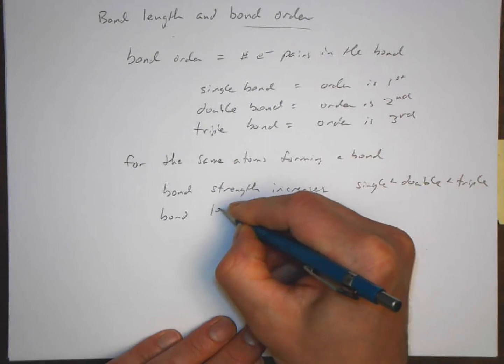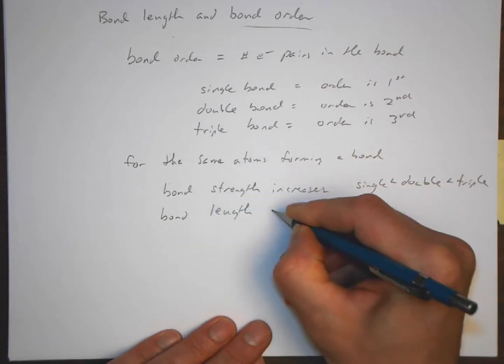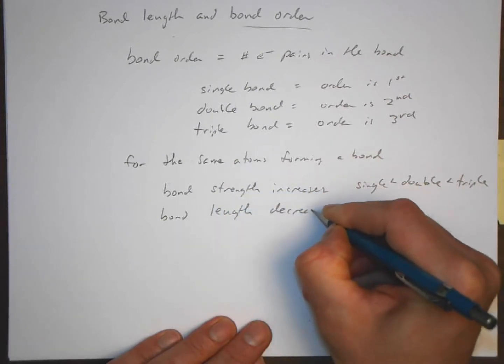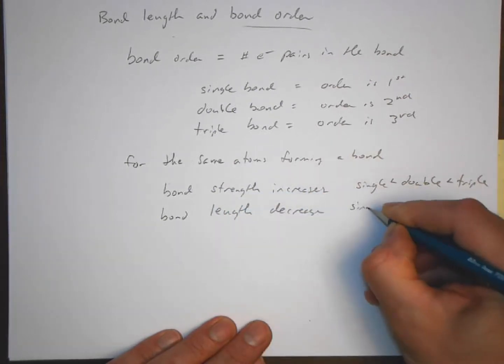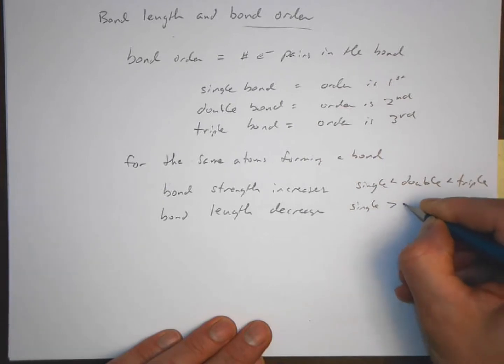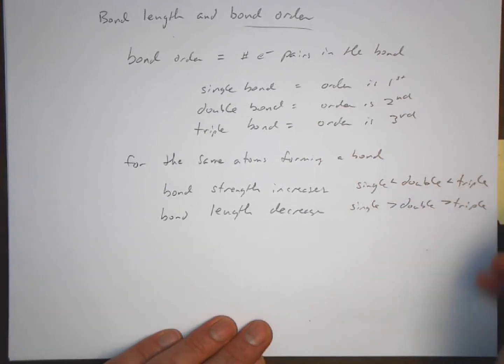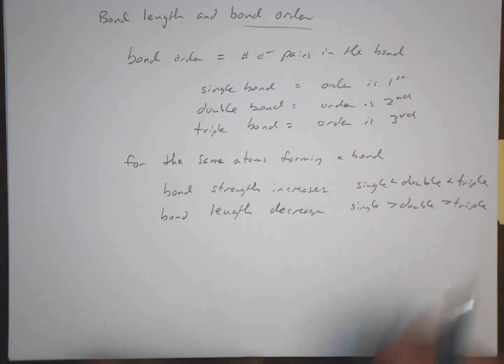Bond length decreases as we go from single, from double, to triple. So let's think about what this is saying.